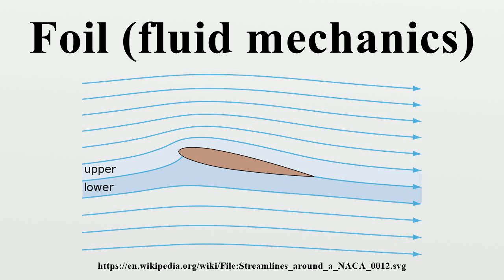So the resulting flow field about the foil has a higher average velocity on the upper surface than on the lower surface.